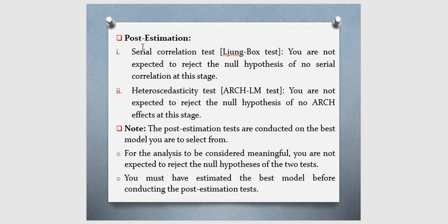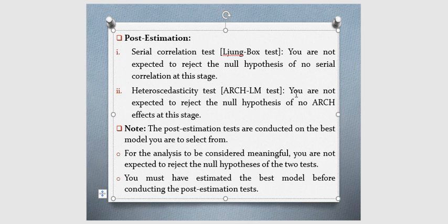And finally, you need to conduct what we call post-estimation test. Now, the post-estimation test involves serial correlation test and heteroscedasticity test. Under serial correlation test, you are not expected to reject the null hypothesis of no serial correlation at this stage. Under heteroscedasticity test, you are not expected to reject the null hypothesis of no ARCH effect at this stage.